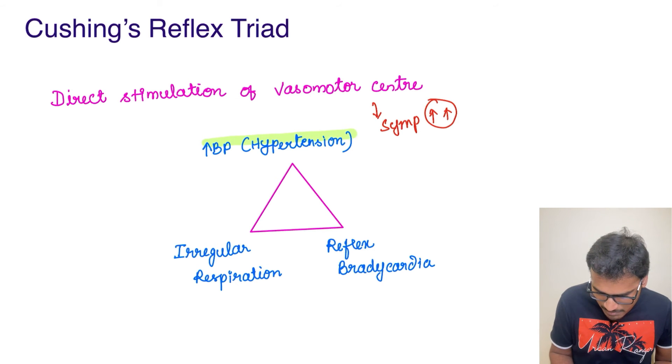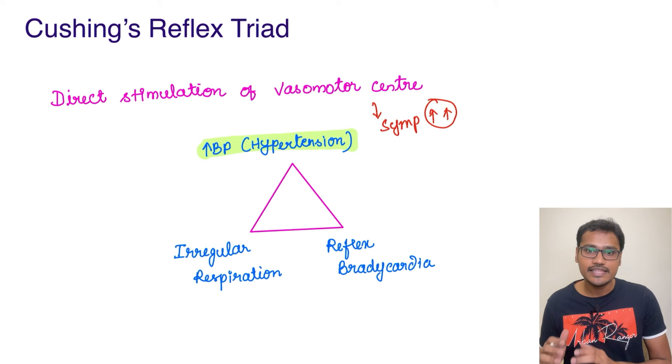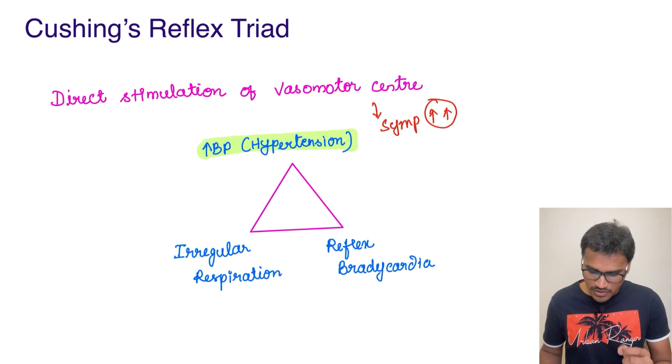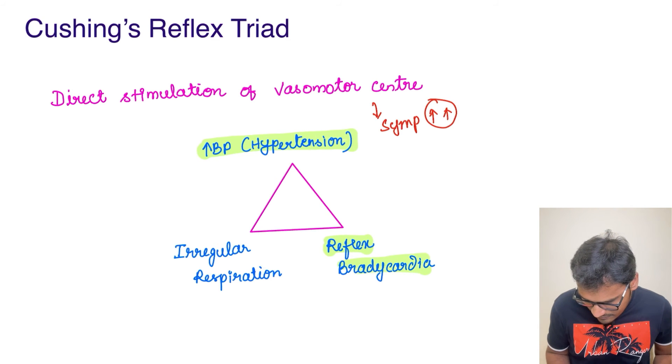Because of this increase in BP that leads to hypertension, and because of this huge rise in BP, it will be sensed by the baroreceptors and finally they are going to reduce the heart rate. It is going to cause reflex bradycardia.